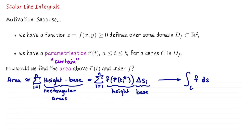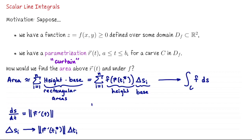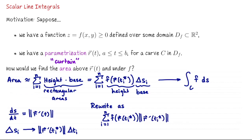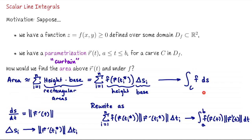What we do instead is use the relationship between the arc length function and the speed, namely ds/dt equals the speed, to replace delta s_i with the speed times the change in time. So if I go back to the Riemann sum and replace delta s_i with this new expression, we get an integral expression for scalar line integrals that we typically use in practice. The domain for t goes from a to b, and what we're integrating is f of r of t times the speed, the length of r prime of t, and then we integrate that with respect to t. This form is really based on the definition — this is what a scalar line integral is — integrating f over a curve with respect to arc length.